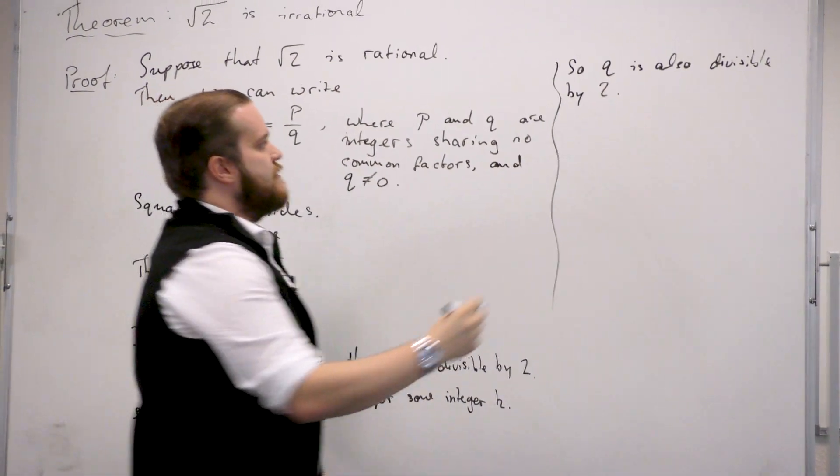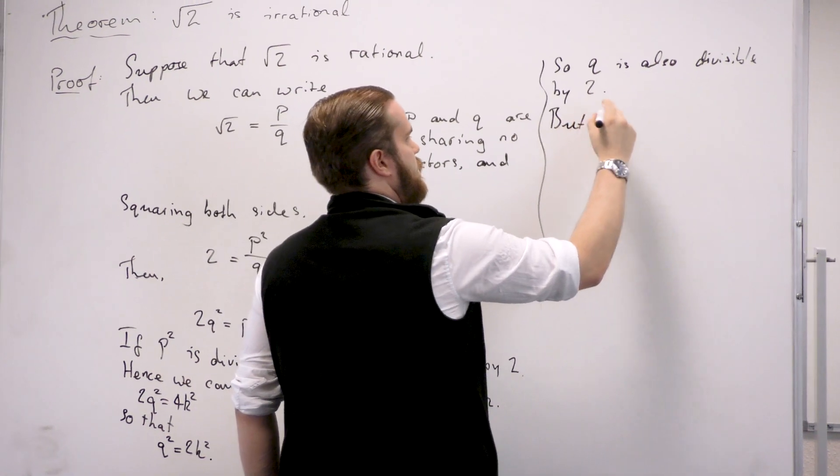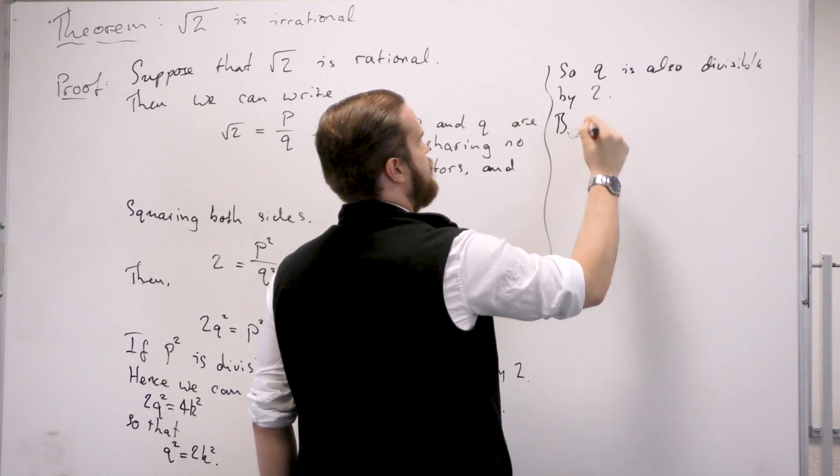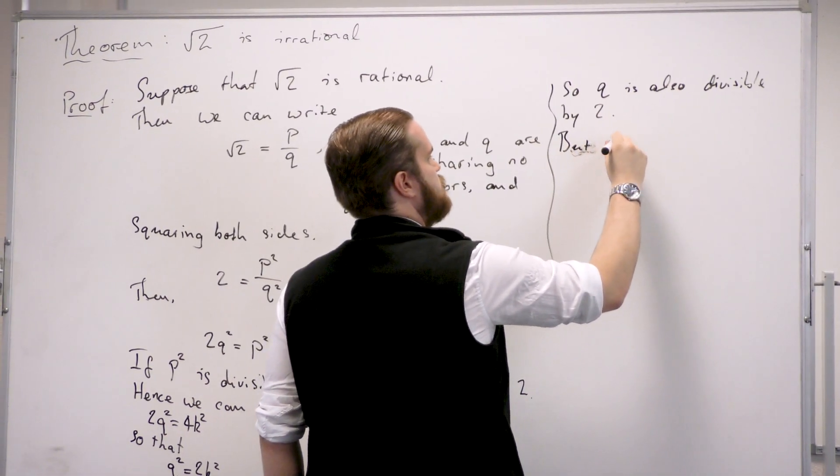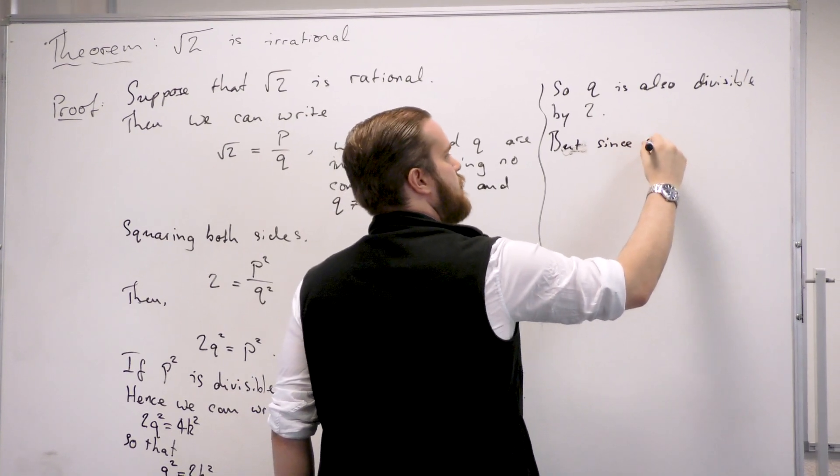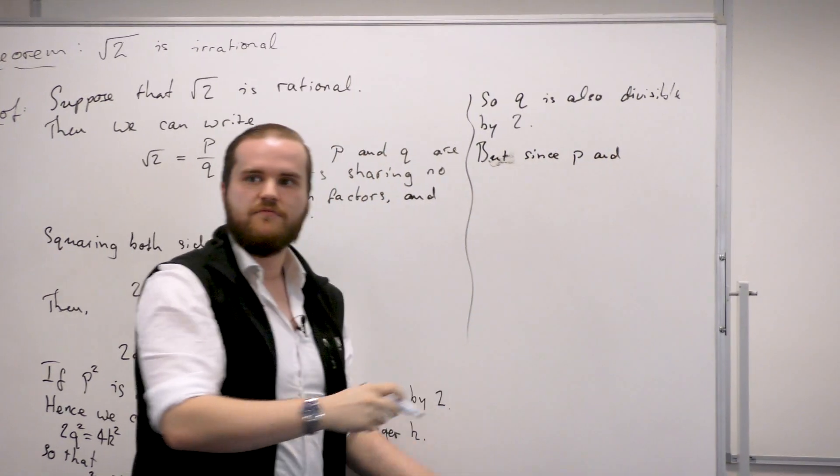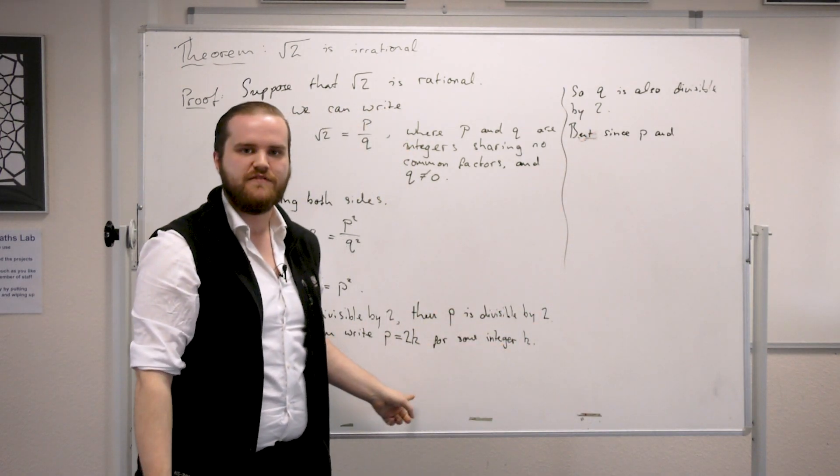But there's our contradiction. So p and q were assumed to share no common factors, but we've just shown that they share a factor of 2.